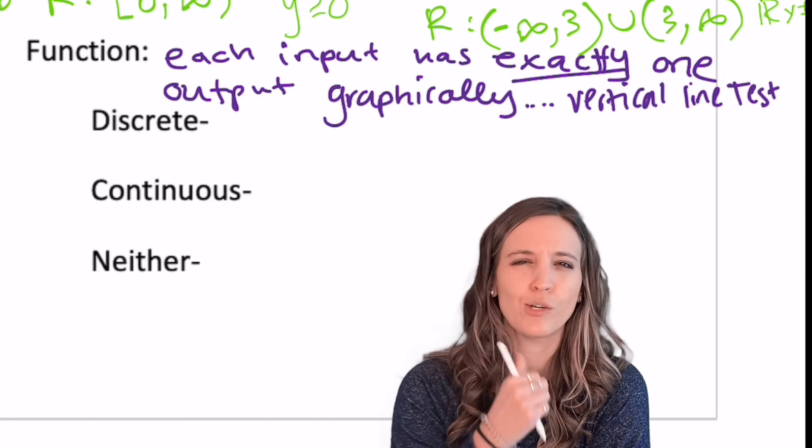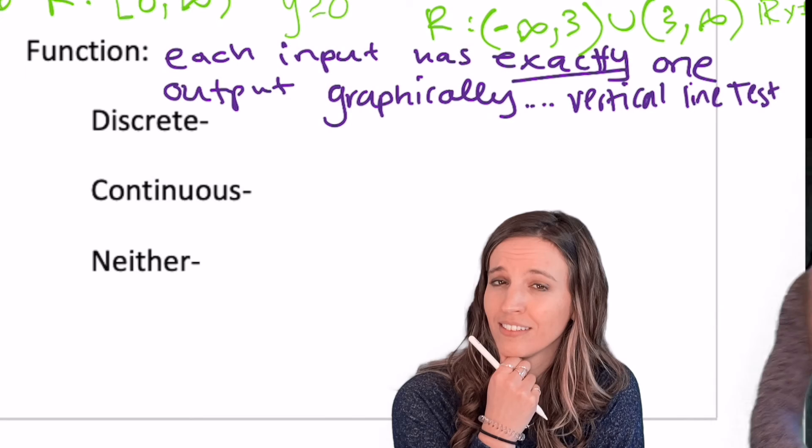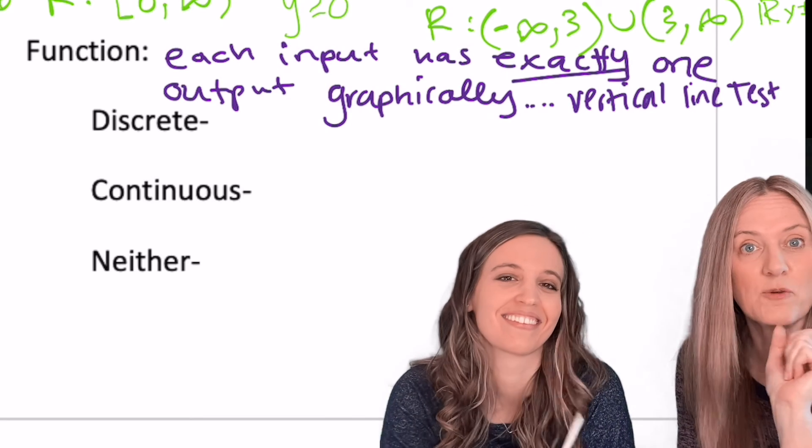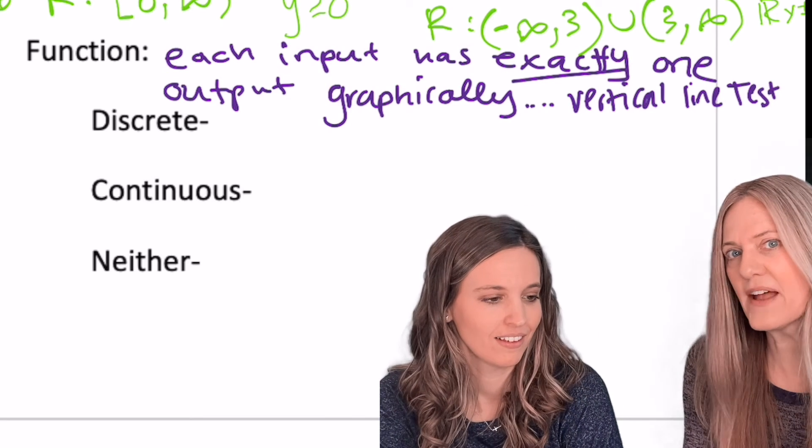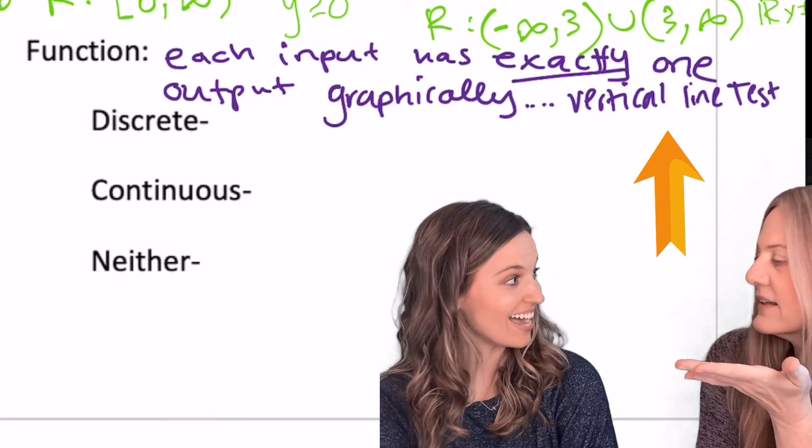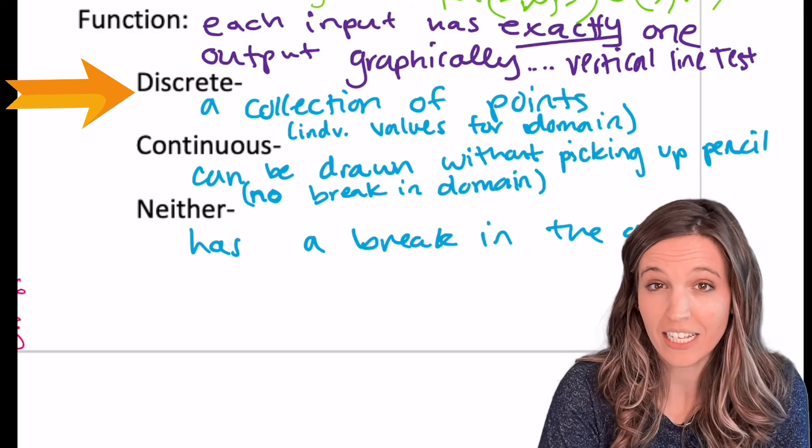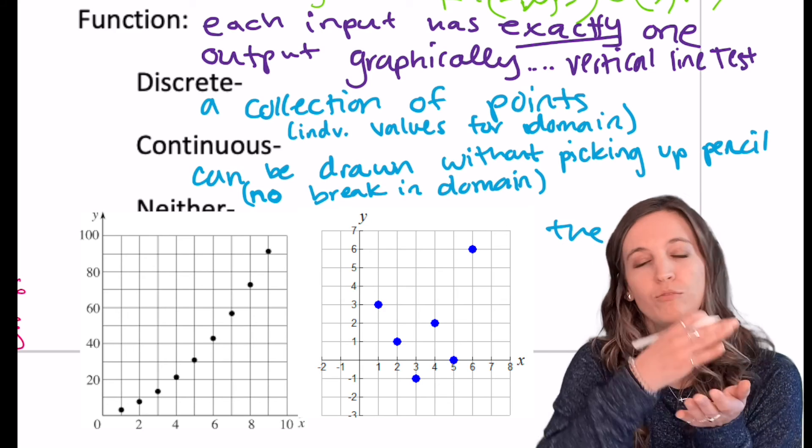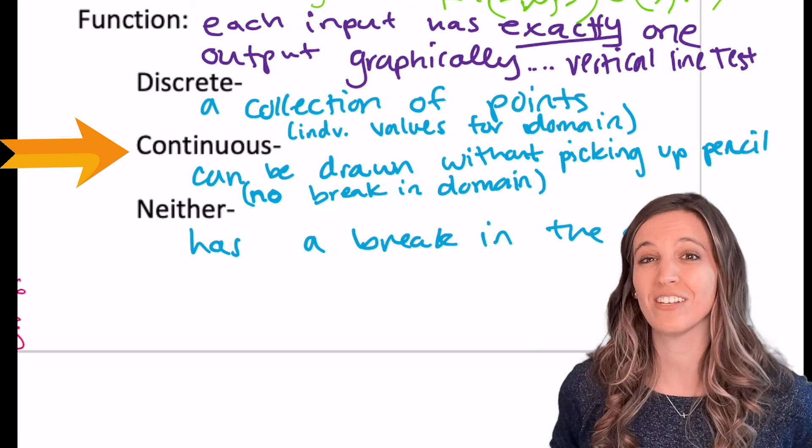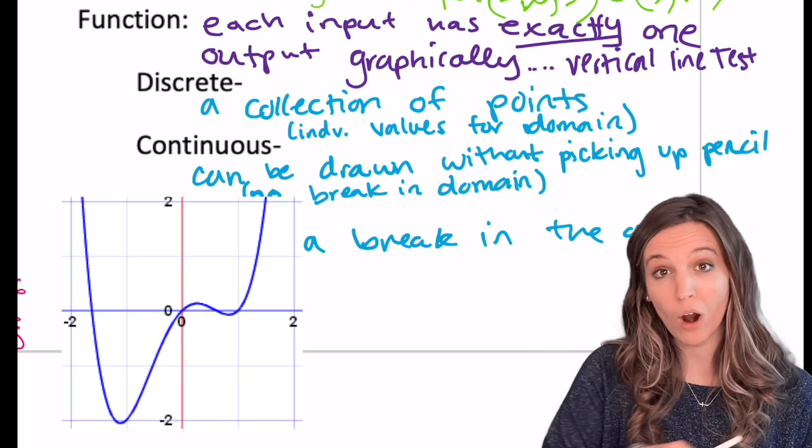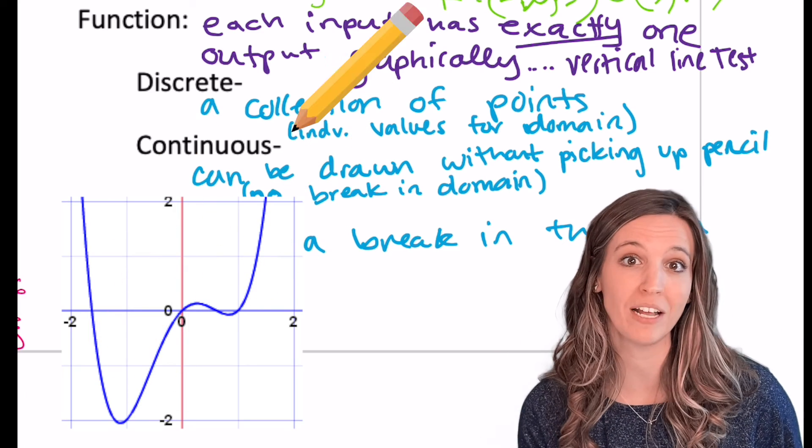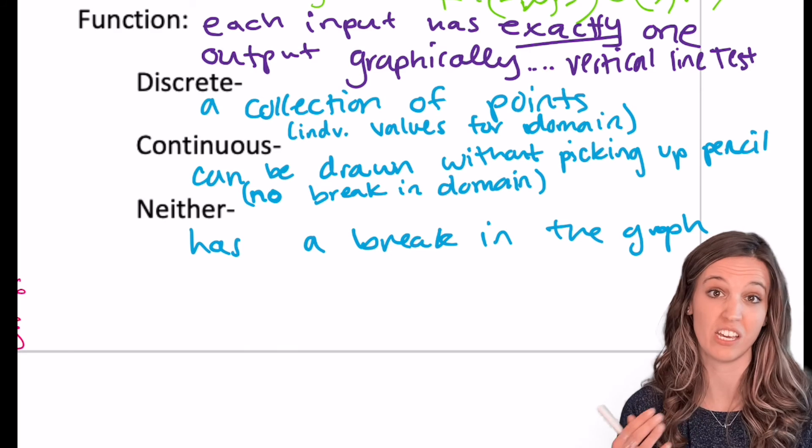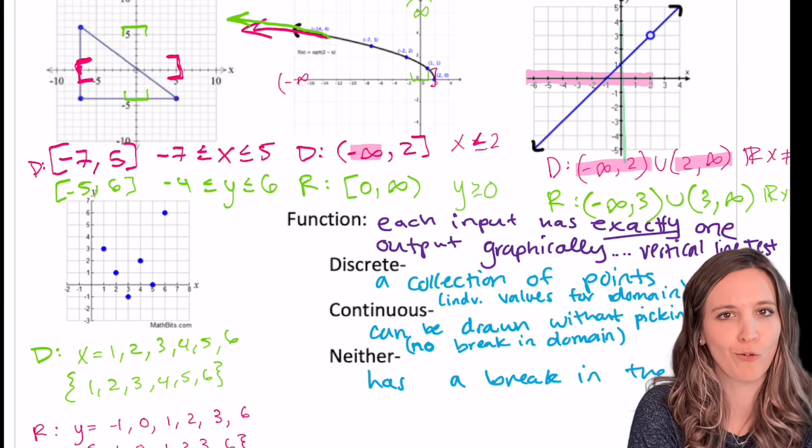Let's talk about what types of graphs these are. Function. Do you remember what makes a relation a function? I think so. Remember, that's when each input has exactly one output. And how did we tell graphically? The vertical line test. A graph is said to be discrete if it's a collection of points. So where we had the domain, just be a bunch of x values. A graph is said to be continuous if we can draw the entire graph without picking up our pencil. So, no breaks in our domain. Now, we could have graphs that are neither of these. Let's go back and classify our four graphs.